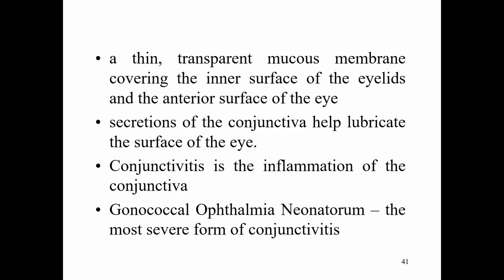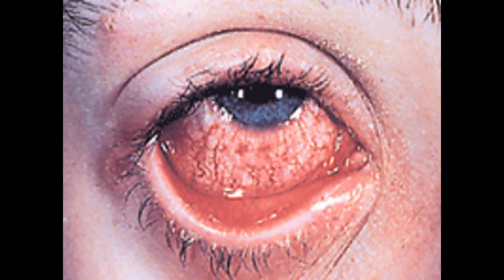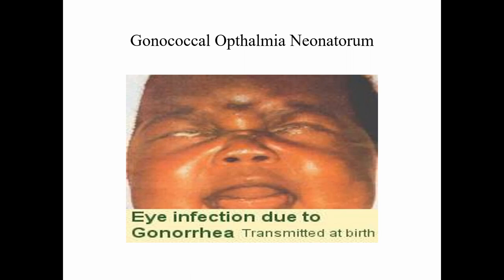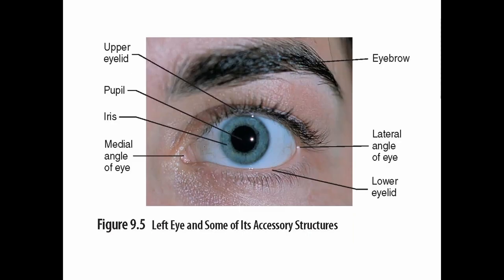The conjunctiva is a thin transparent mucous membrane covering the interior surface of the eyelids and anterior surface of the eye. Its secretions help lubricate the eye surface. Conjunctivitis is inflammation of the conjunctiva — commonly known as pink eye or sore eyes. Gonococcal ophthalmia neonatorum is the most severe form of conjunctivitis, caused by gonorrhea bacteria that can be passed from mother to child during birth. It can be prevented by dropping silver nitrate ophthalmic solution on the eye after birth.